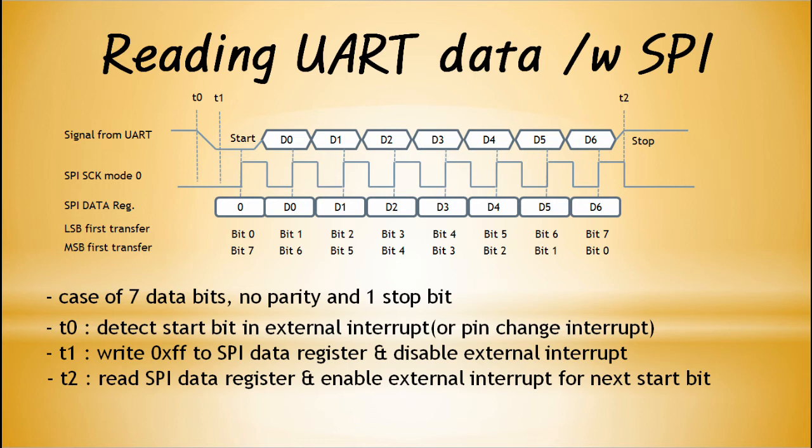To read the signal from the UART, the SPI first uses an external interrupt or pin change interrupt to detect the start bit, so that the interrupt is triggered at the falling edge. The external interrupt or pin change interrupt should use the highest priority possible. If the priority is low, the CPU may execute other interrupt code at that time, causing incorrect data to be read, as shown in the figure.